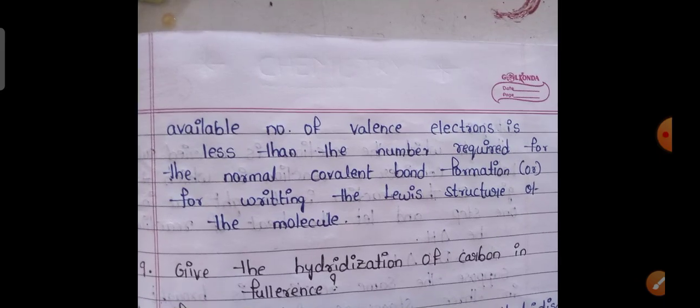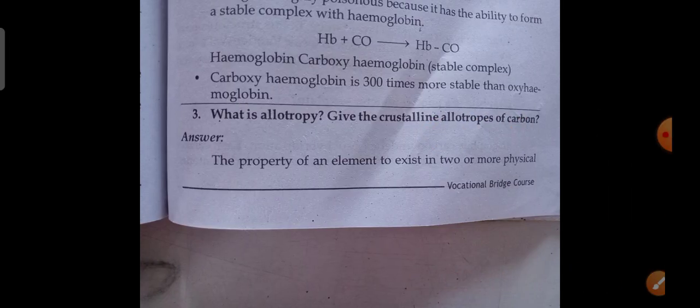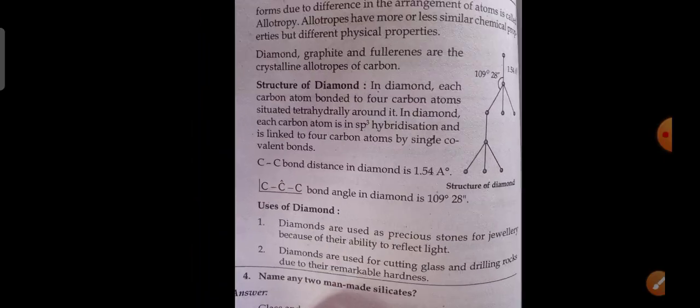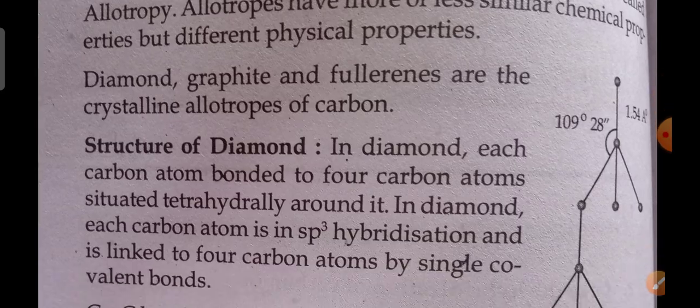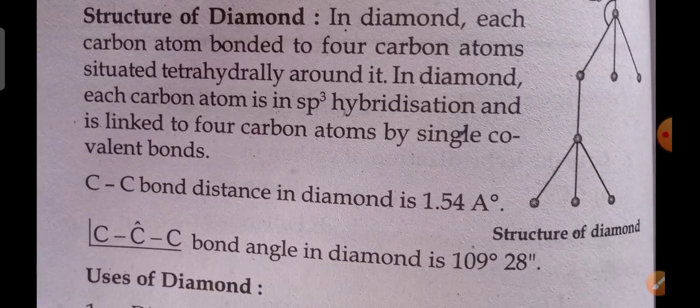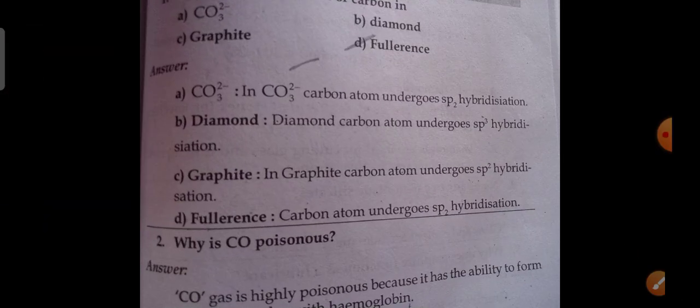Explain the inert pair effect. What is the chemical substance used in Calgon method? What are the electron-deficient compounds? Boron number of valence electrons also. Continuation: what is allotropy? Give the number of allotropes of carbon. Question.